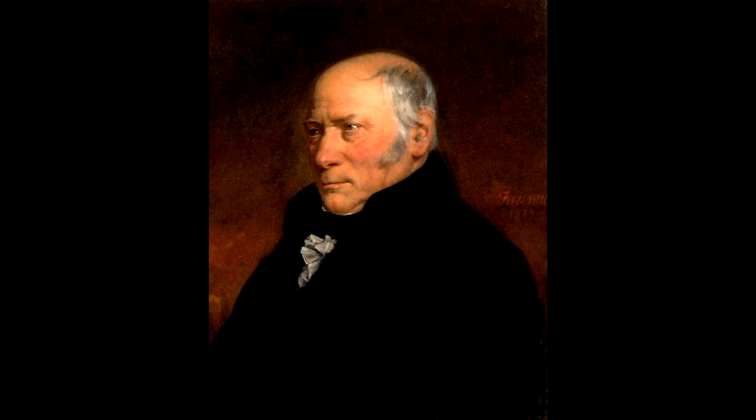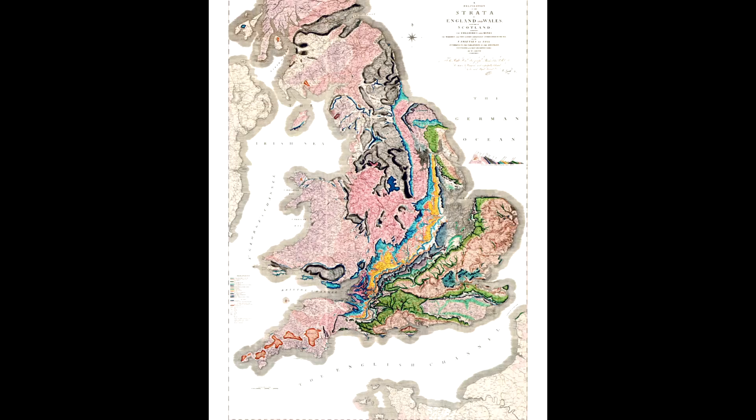William Strata Smith, born in 1769 and died in 1839, was an English geologist who was credited with creating the first detailed nationwide geological map of any country. This exact map here, in fact, of England, Wales and a little bit of Scotland.